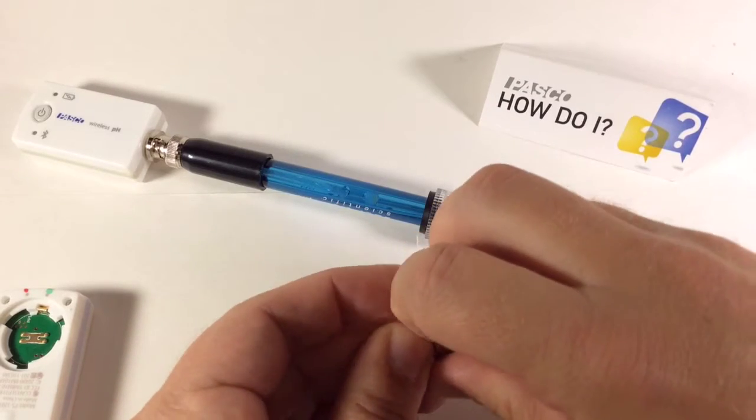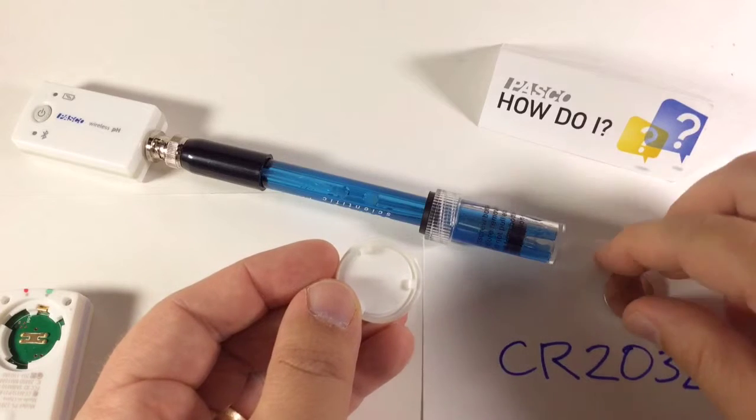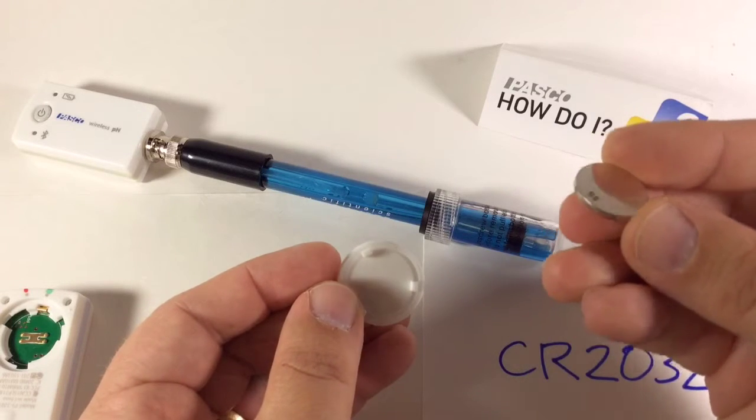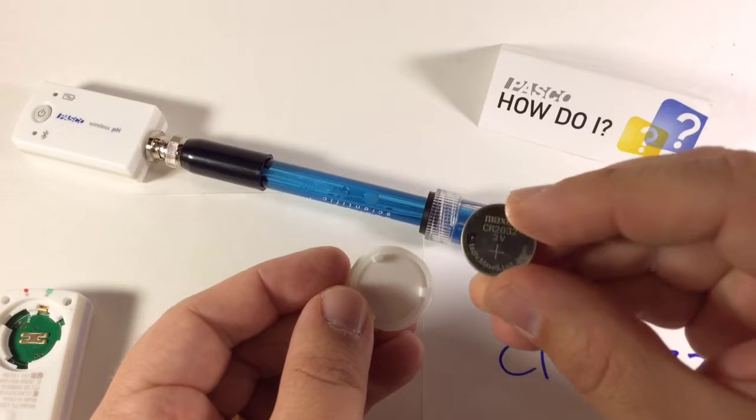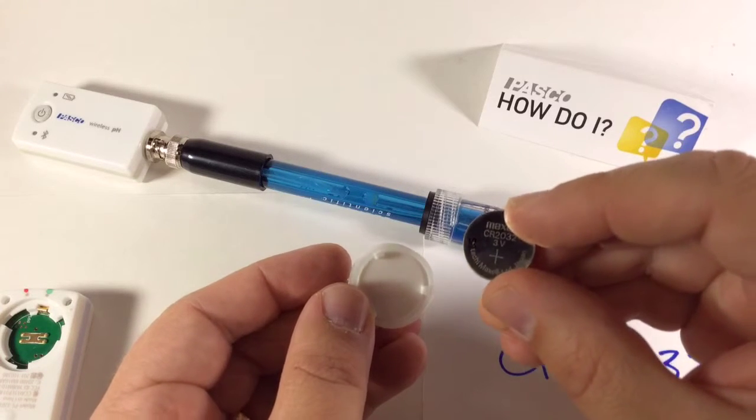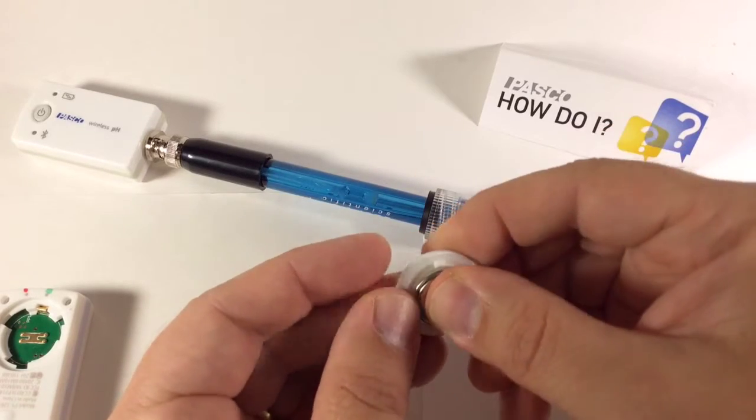So I'm going to remove the old battery and dispose of it properly. And I'll take my new battery, and I need to identify the positive side. The positive side is a little bit thicker, and you'll see a positive symbol plus sign on that.